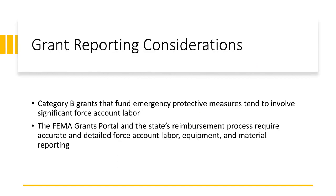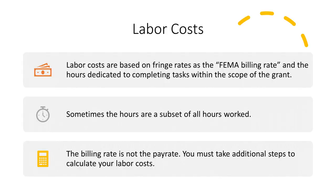Category B or Cat B grants that fund emergency protective measures tend to involve significant force account labor. The Grants Portal and the state's reimbursement process requires accurate and detailed force account labor, equipment, and material reporting. Labor costs are based on the fringe rate as the FEMA billing rate and the hours dedicated to completing tasks within the scope of the grant. Sometimes these hours are limited to just overtime, so the hours are a subset of all hours worked, and the billing rate is not the pay rate.